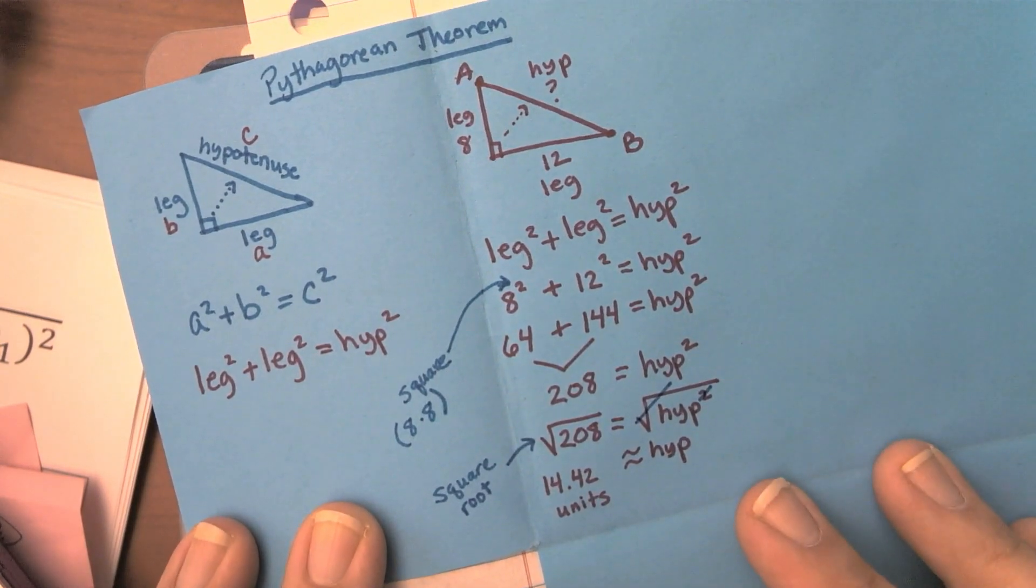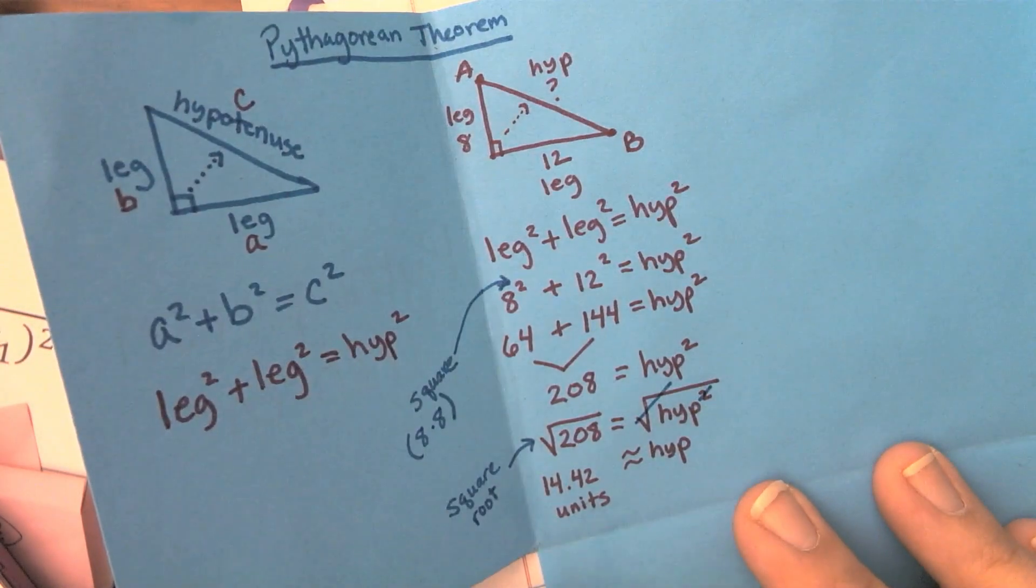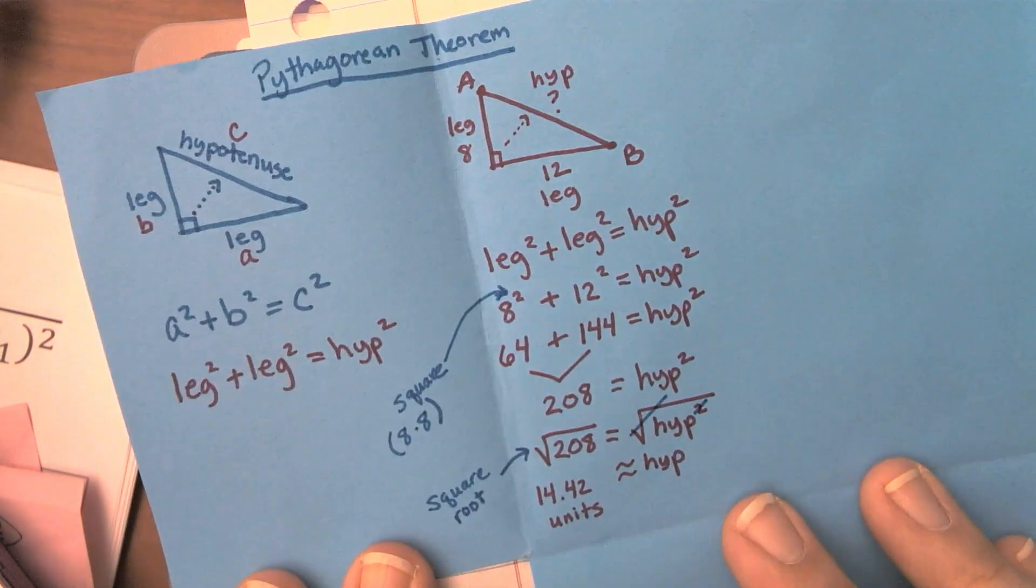All right, so that is it for part 1 with Pythagorean Theorem. Please watch the other video, part 2, to see the distance formula. Thanks for watching.